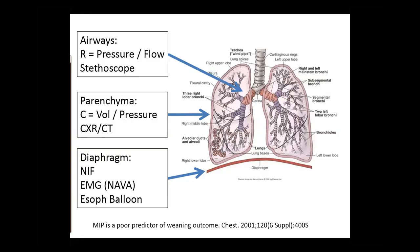So why did the patient fail? The usual workup includes looking at the airways, the parenchyma, and the effort — assuming the brain is working fine. For airways, resistance is the key. If you have pressure and flow measurements, you can calculate resistance. If not, you use the stethoscope for prolonged exhalation and look at waveform parameters on the ventilator for air trapping to decide if airway resistance is a new or added problem.